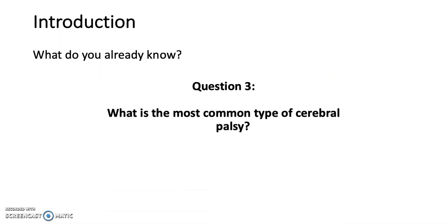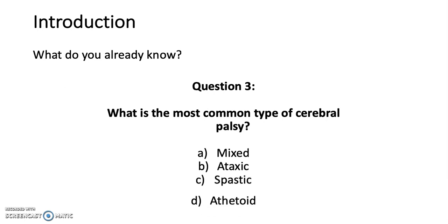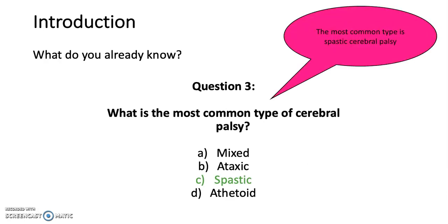Question 3: What is the most common type of cerebral palsy? Is it A. Mixed, B. Ataxic, C. Spastic, or D. Athetoid? The answer is C. Spastic. Thank you for listening — you've reached the end of the slideshow. I hope you found it interesting and useful for your learning. Please join us again on Crash Course Medicine for more material.